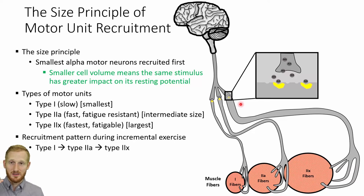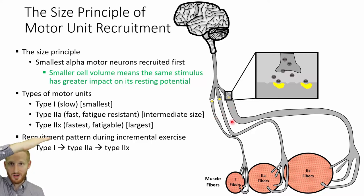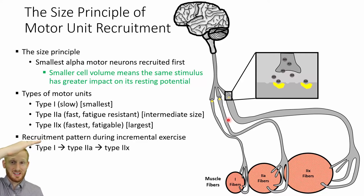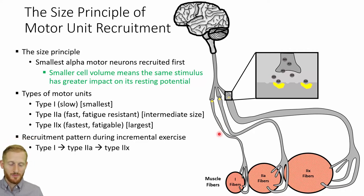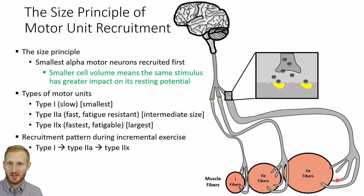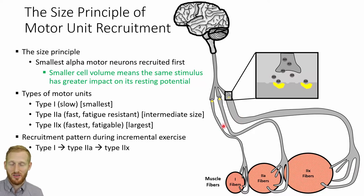When increasing the intensity of a contraction, we ramp up: type one activates first, then type two A's, then type two X's. When decreasing the contraction, we produce less acetylcholine, which turns off the type two X's first, then type two A's second, then type one's third. So we ramp up starting from type ones and ramp down ending with type ones. Type one fibers are always the first and last fibers activated; type two X fibers are always the last activated and the first to deactivate. This is all controlled by the size of the alpha motor neurons — a larger alpha motor neuron needs a greater stimulus to cause an action potential; a smaller one needs a smaller stimulus.